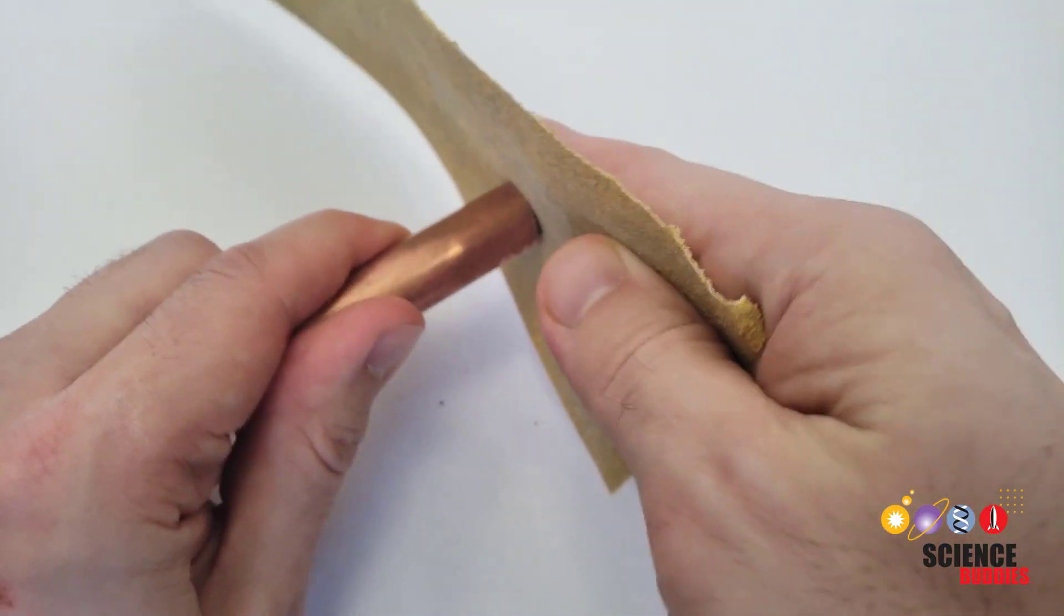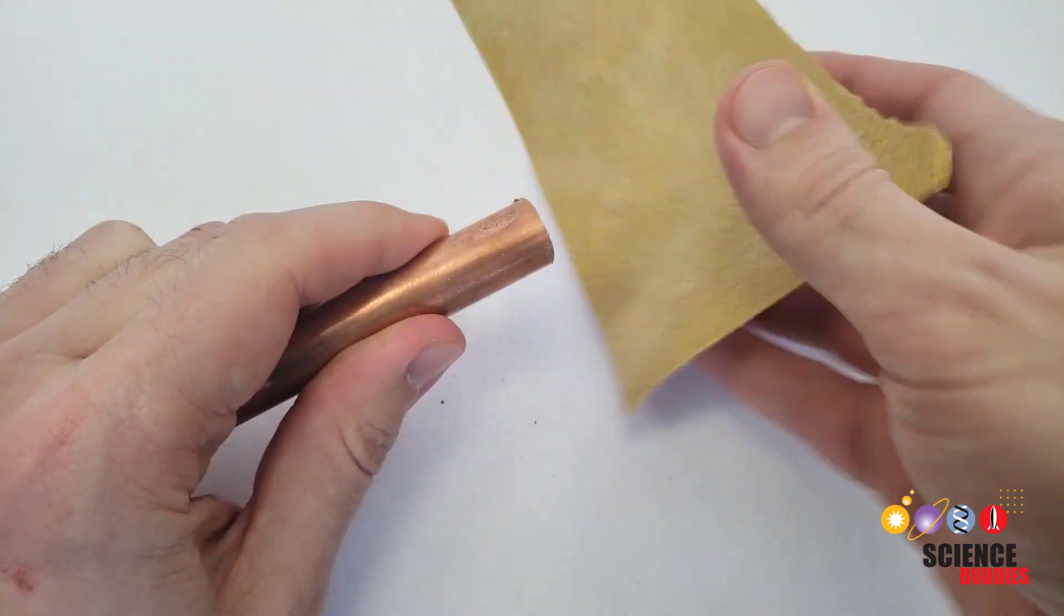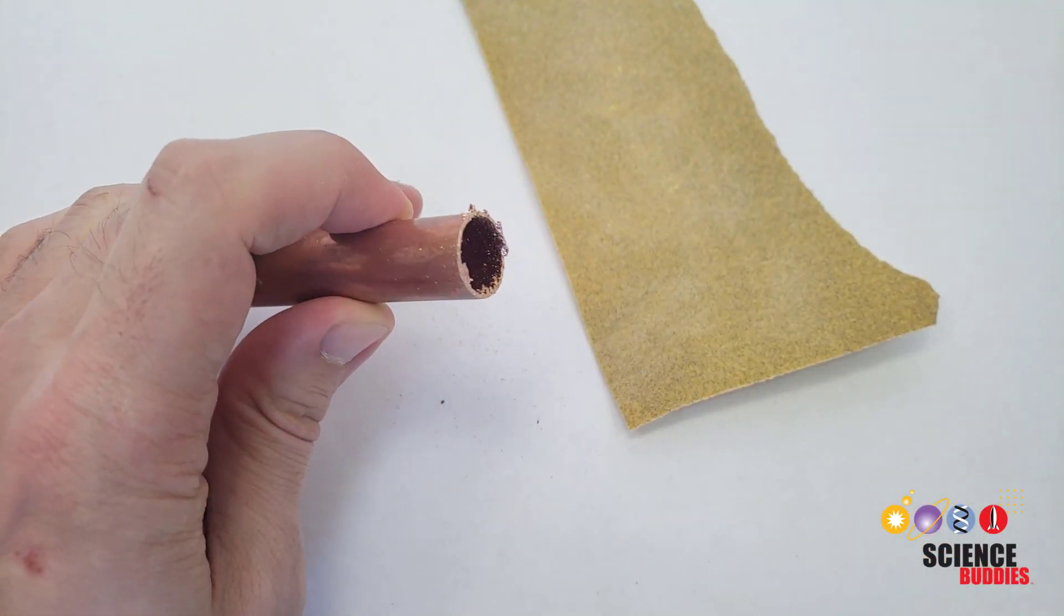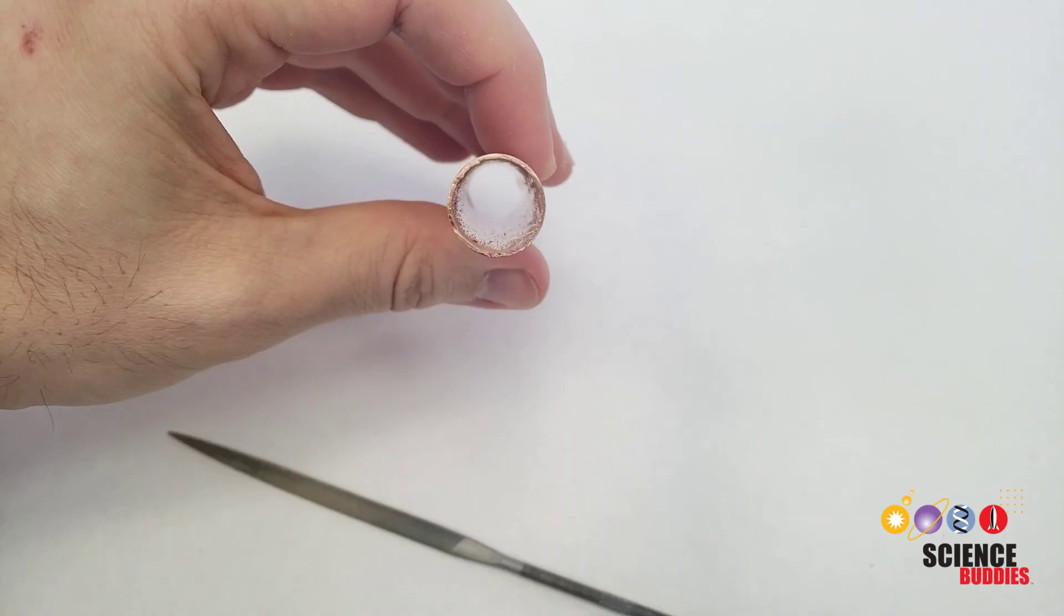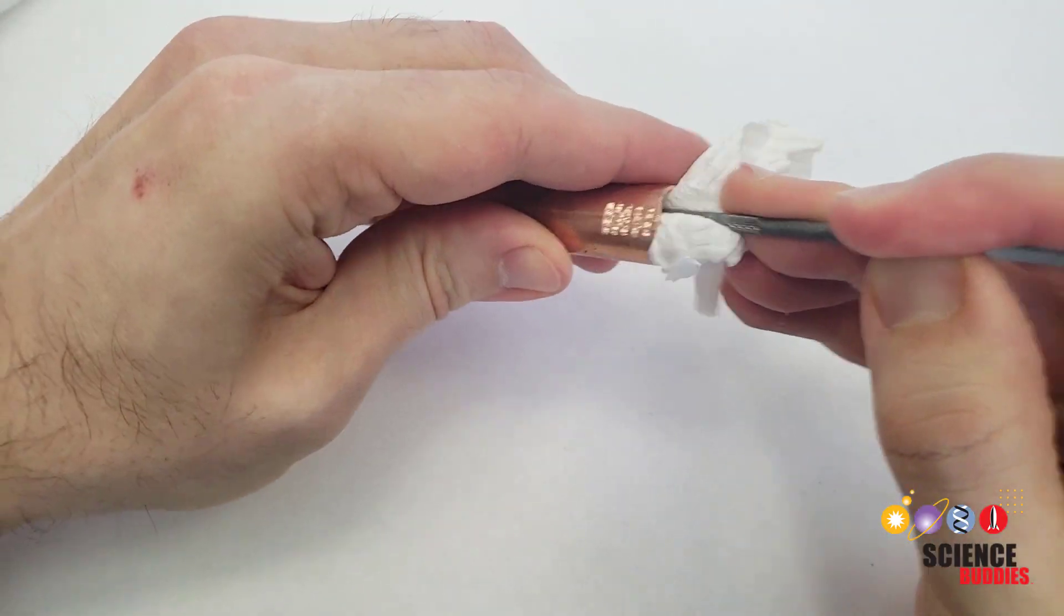Next, you'll want to remove any rough edges on the cut end of the pipe. You can do this using coarse sandpaper, a file, or a rotary tool like a Dremel. You can also remove dust and shavings from inside the pipe by pushing a paper towel through it.